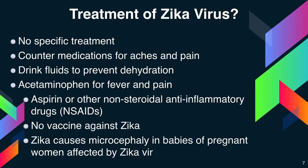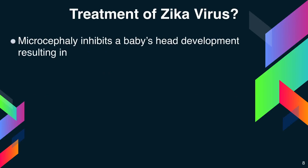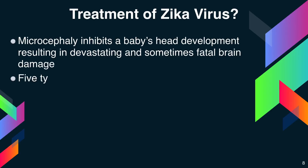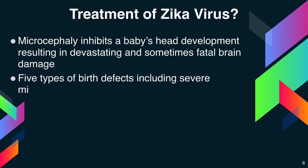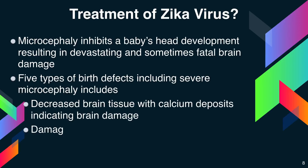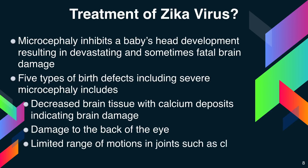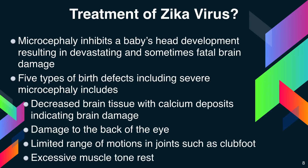Zika virus mainly causes microcephaly in babies of pregnant women affected by Zika virus. Microcephaly inhibits the baby's head development, resulting in devastating and sometimes fatal brain damage. There are 5 types of birth defects, including severe microcephaly with decreased brain tissue and calcium deposits indicating brain damage, damage to the back of the eye, limited range of motion in joints such as club foot, and excessive muscle tone restricting movement.